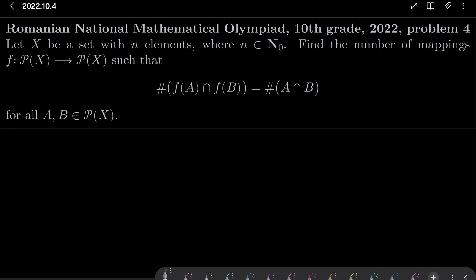Hello friends. In this video I'd like to solve the following problem from the Romanian National Mathematical Olympiad for 10th graders 2022, problem number 4. Let x be a set with n elements where n is any natural number from 0 onwards. We wish to find the number of mappings f from the power set of x into itself, such that the cardinality of f(A) intersected with f(B) equals the cardinality of A intersected with B, for all subsets A and B of x.